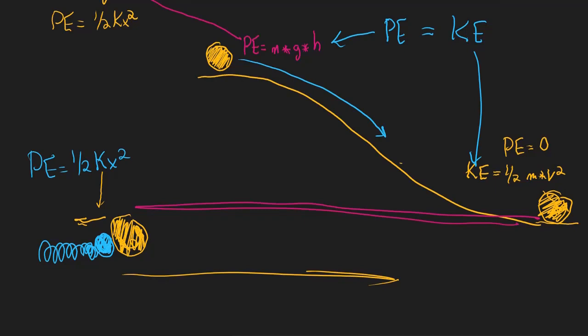x is the distance the spring is compressed — the displacement. If at rest the spring has a certain length, but when compressed it's shorter, x is that difference. So x squared is used in the potential energy equation for the spring.